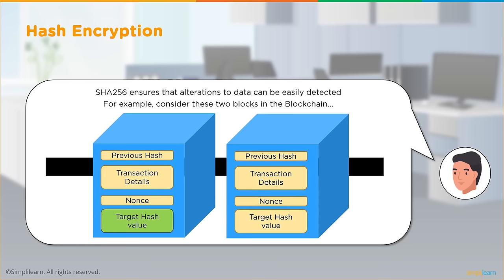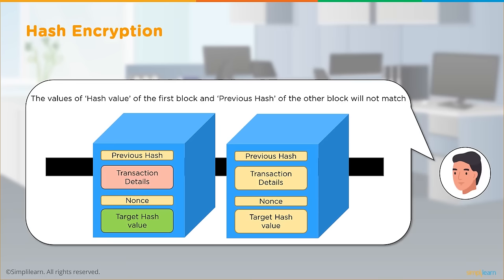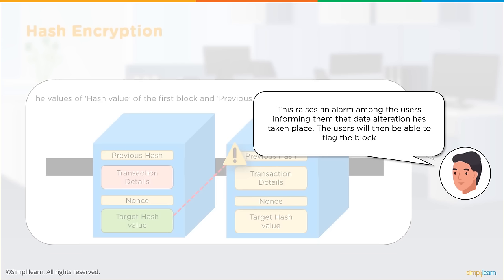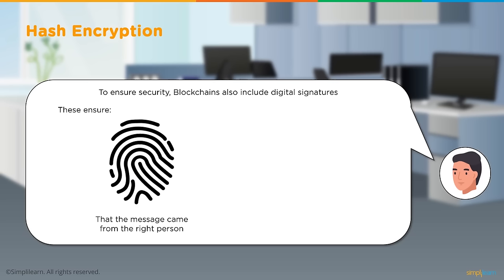SHA-256 ensures alterations to data can be easily detected. If someone alters transaction details in one block, its hash value changes. The previous hash value of the subsequent block will then not match, making that block invalid. This raises an alarm among users, informing them that data alteration has occurred. Users can then flag the block so the alteration can be identified and rectified immediately.